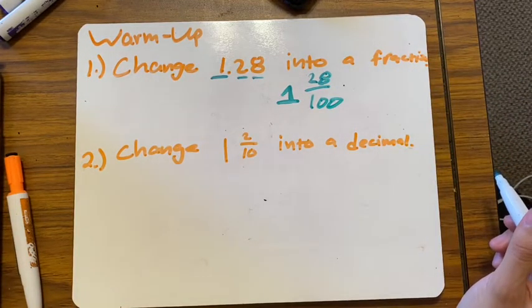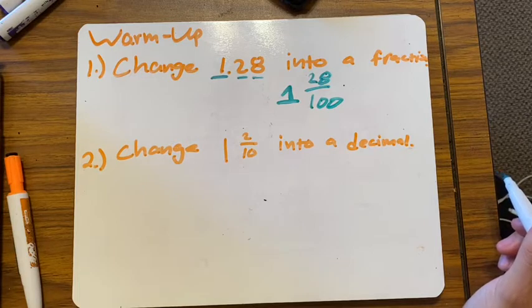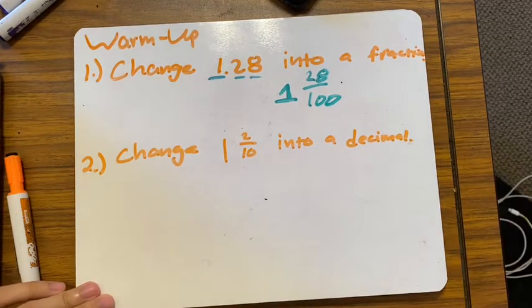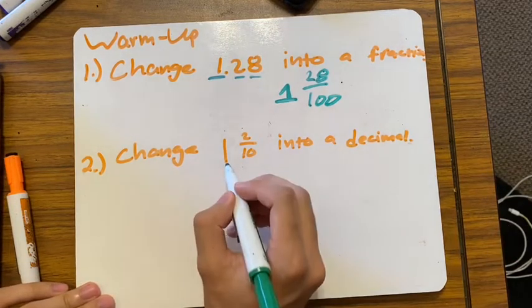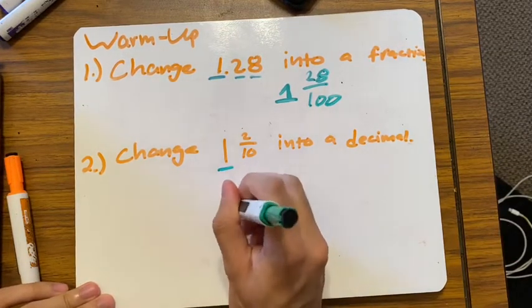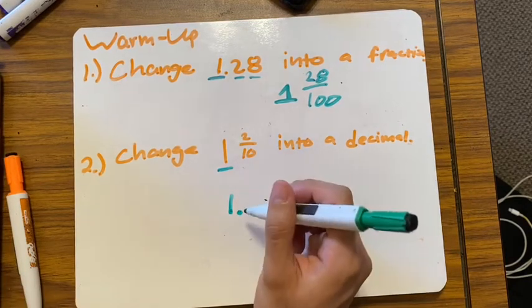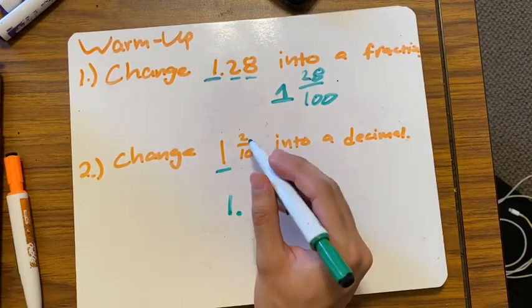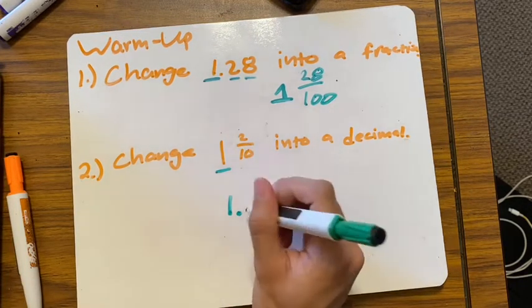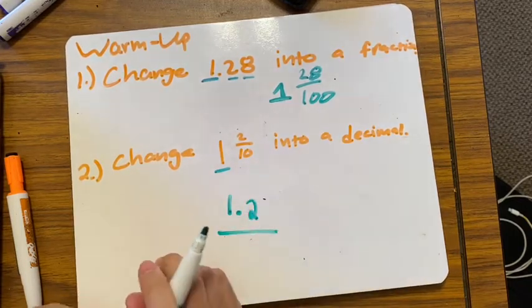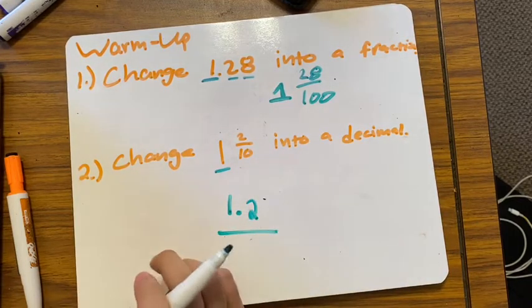Next: change one whole and two tenths into a decimal. Now we're going the opposite way. Again, check if you have a whole number — I have one. My fraction is two tenths, which means I only have a tenth, so it's 1.2.